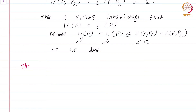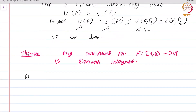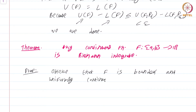But this is very useful as can be seen in the next theorem: any continuous function f from [a,b] to ℝ is Riemann integrable. Here is a situation where we will not just use continuity — we will use uniform continuity in the proof. First of all, observe that f is bounded because it attains its maxima and minima, and f is uniformly continuous.